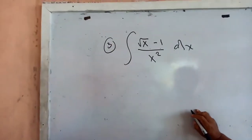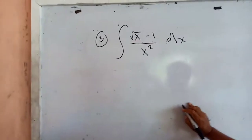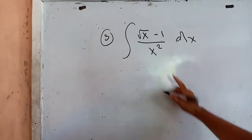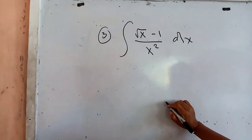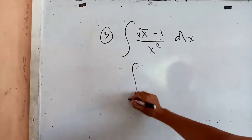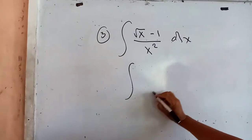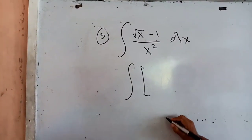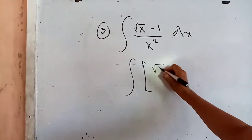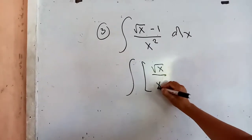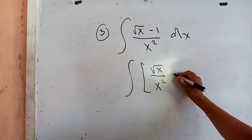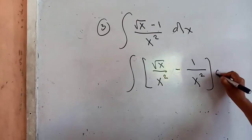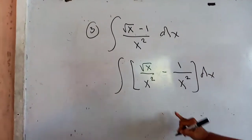Problem number 3: the integral of x times the square root of (x minus 1), all over x squared, times dx. To do this problem, again we use the distributive law — that will be the square root of x divided by x squared, minus 1 all over x squared, times the differential dx. Now again, we cannot simplify unless we change this to exponential form.